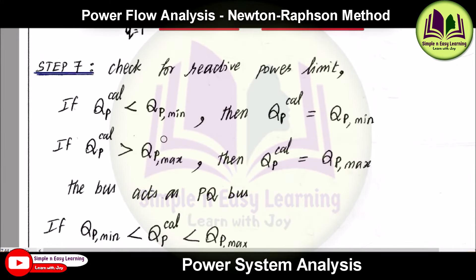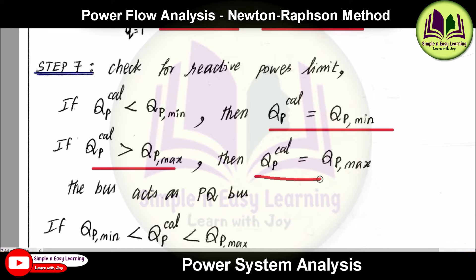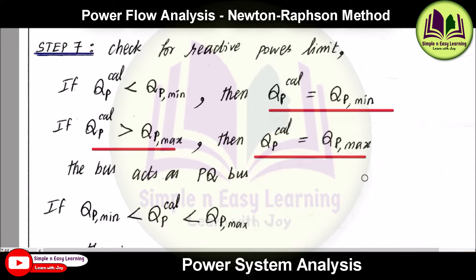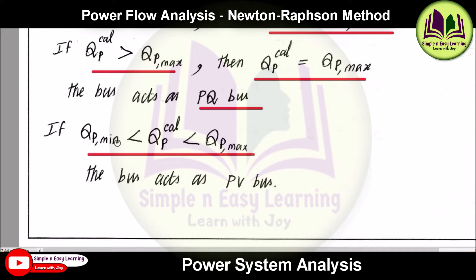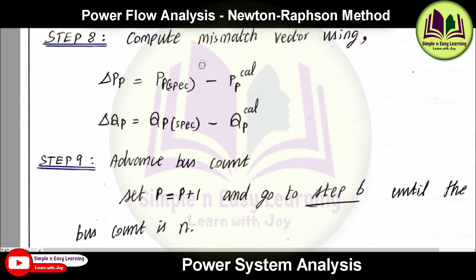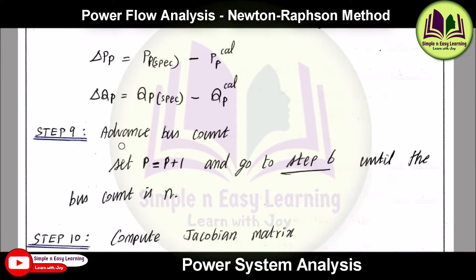Step 7: check the reactive power limit. If Qp_calculated is less than Q_min, set Qp_calculated = Q_min; if greater than Q_max, set Qp_calculated = Q_max. The bus then acts as a load bus. If no limit is violated, the bus acts as a generator (PV) bus. Step 8: compute the mismatch vector — delta_Pp = Pp_specified - Pp_calculated, and delta_Qp = Qp_specified - Qp_calculated.